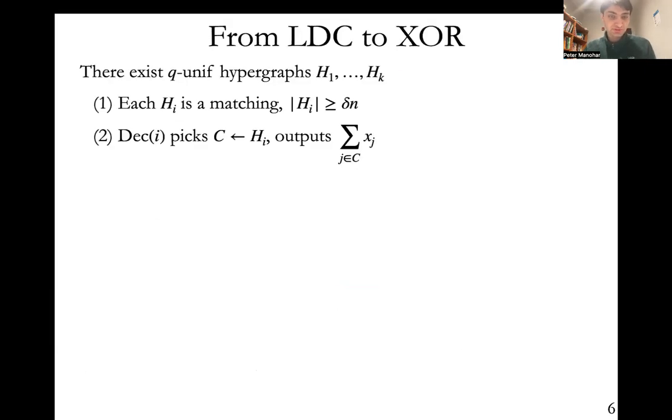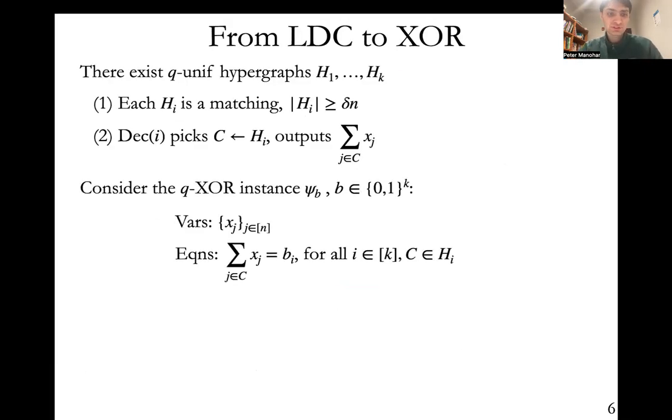Essentially, this is a generic reduction that allows us to put a lot of structure on the locally decodable code. Now I want to construct some XOR instances related to these hypergraphs. We introduce variables x_j, one for each bit of the encoding. The XOR instances should depend on the message b that we are encoding, so we'll have a family of instances. So we have these variables, one for each bit of the encoding. And we have an equation which is for each bit b_i, and for each hyperedge c in h_i, we want the sum of the bits in c, the hyperedge c, to be equal to b_i.